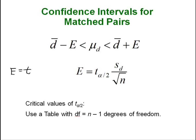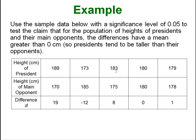It is still almost identical to calculate e. Before our e was t of alpha over 2 times s over the square root of n, and now we just have s sub d, so again we are doing the same thing. We are still just computing a one sample t test and a one sample t interval for confidence intervals. Let's get back to our example.